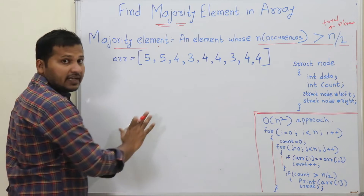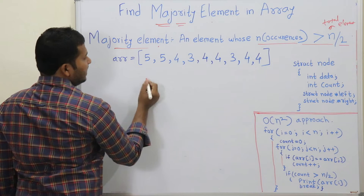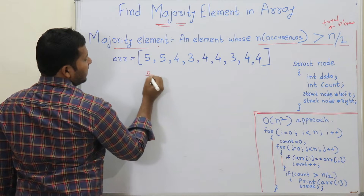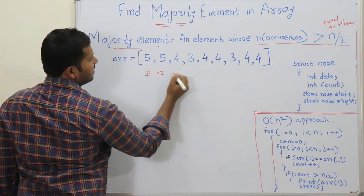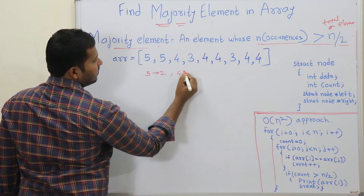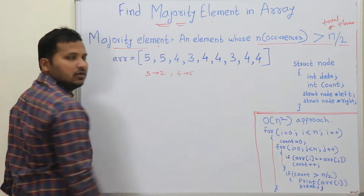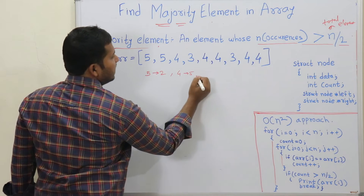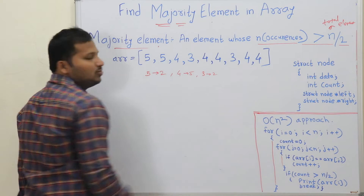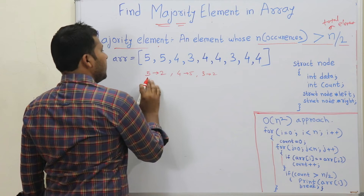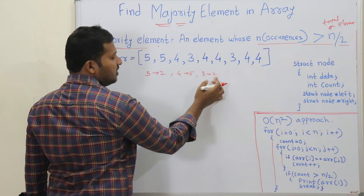Suppose this is the array. How many times has 5 appeared? 5 has appeared 2 times. How many times has 4 appeared? 4 has appeared 5 times. How many times has 3 appeared? 3 has appeared 2 times.